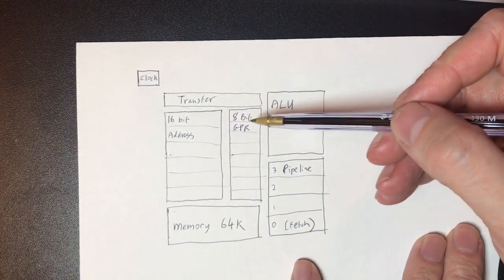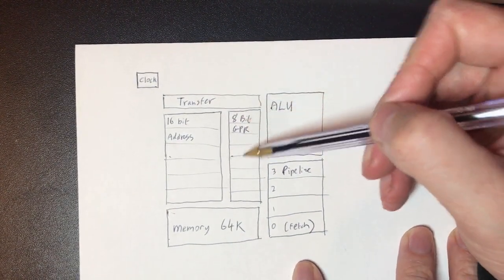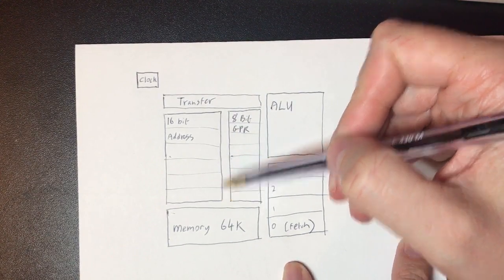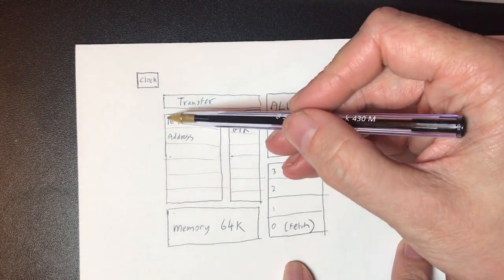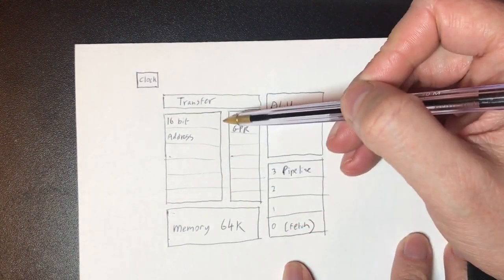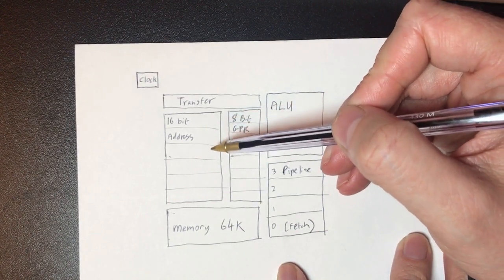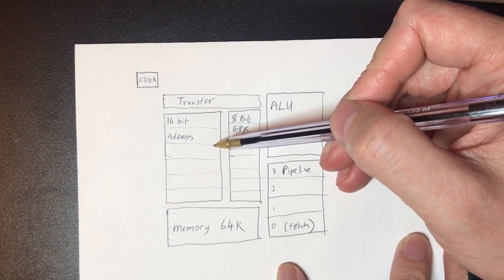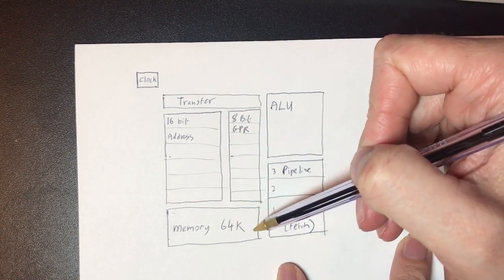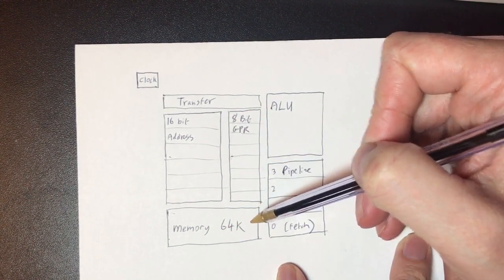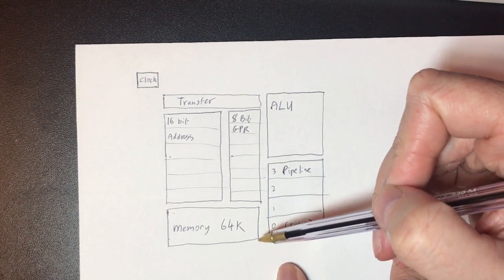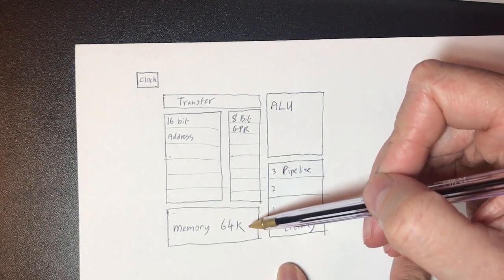So here's the block diagram of what I'm planning. Most significantly, I've got 16-bit address registers. This is because I'd like to be able to access quite a bit more memory and this would give me the ability to address 64 kilobytes, which I would have as a split of RAM and ROM.